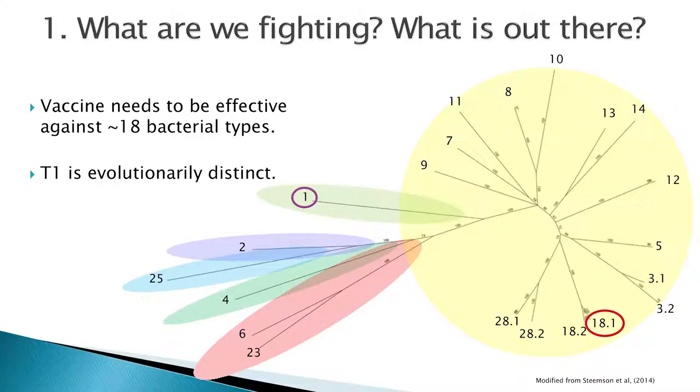The second finding from this is that T1 — shown ringed in purple — that was the structure I showed on the last slide — is actually genetically isolated; it sits off on a branch by itself. Whereas the majority of strains fall in this yellow cluster, so they're far more closely related to each other. For my work I've been using a protein ringed in red called T18, which is a representative of this yellow cluster, allowing us to look at broad differences between these strains.